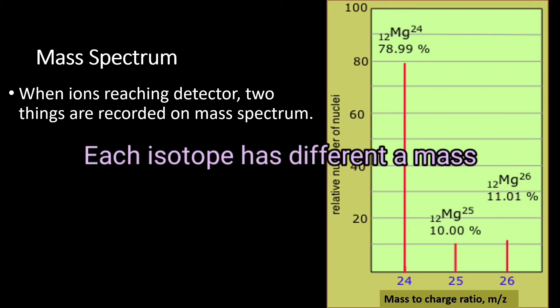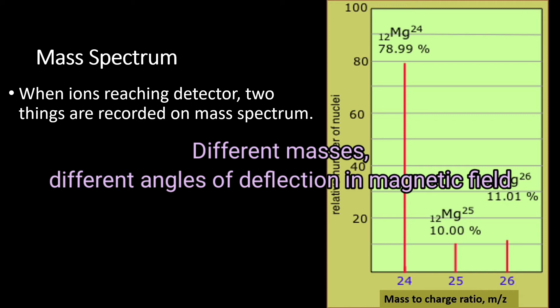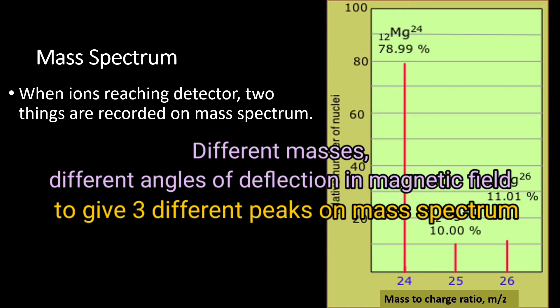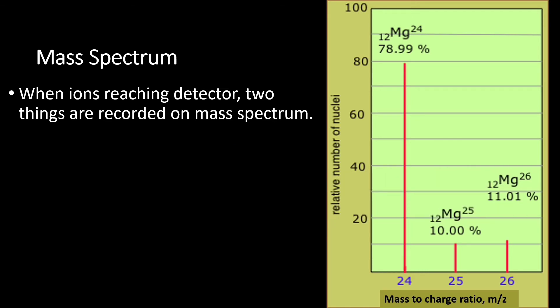And each of these isotopes having different isotopic mass. So because they are having different masses, that's why when passing through the magnetic field, they will be deflected differently to give three different peaks on the mass spectrum.